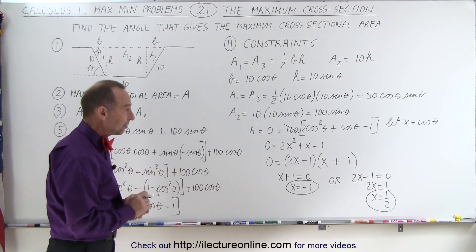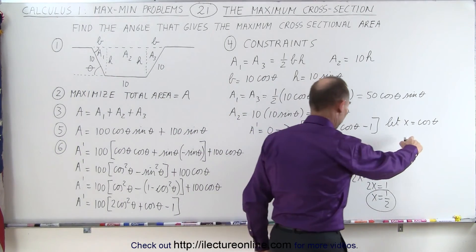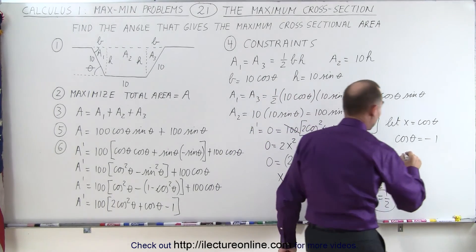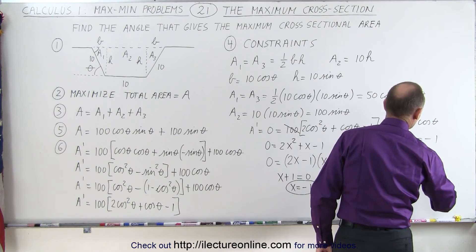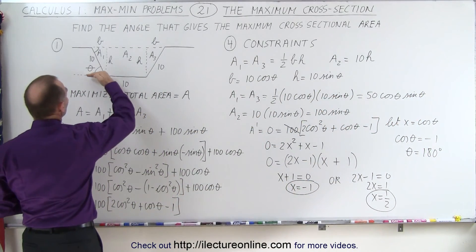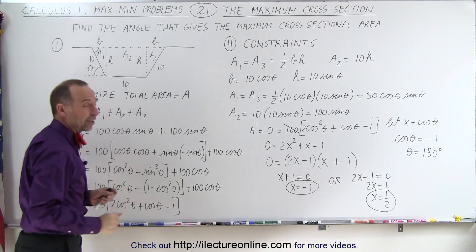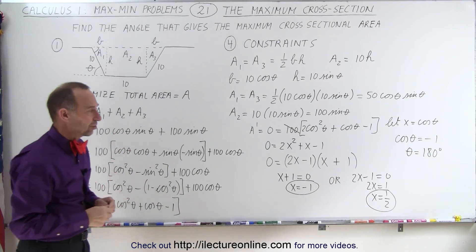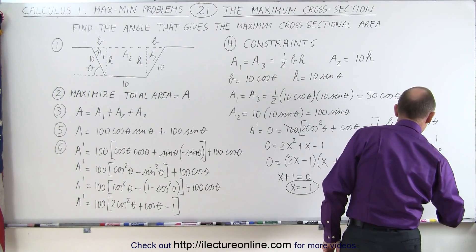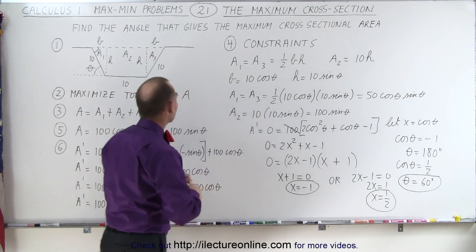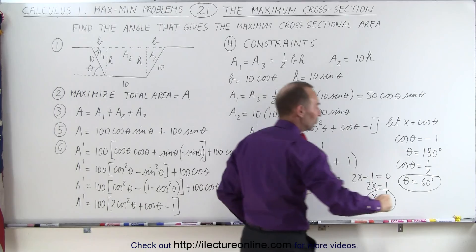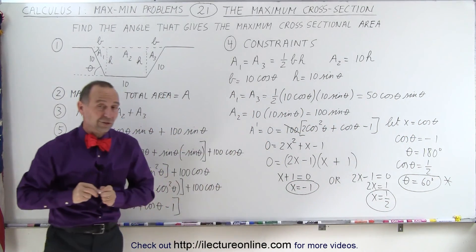We weren't looking for X — we need angle theta. The cosine of theta equals negative 1 means theta equals 180 degrees. Looking at the diagram, if the angle is 180 degrees the side folds flat and the cross-sectional area becomes 0, so that's the minimum, not what we wanted. The other solution is cosine theta equals one-half, which means theta equals 60 degrees. This is the maximum cross-sectional area solution. So an angle of 60 degrees relative to the horizontal gives the maximum cross-sectional area.